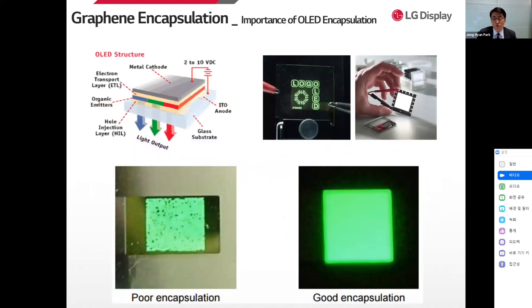This slide shows the importance of OLED encapsulation. OLED has a structure that is vulnerable to moisture in the gaseous state. When the upper layer of the OLED device is exposed to external moisture or oxygen, pixel shrinkage occurs in which the light-emitting area is reduced, or a dark spot non-emission area is created in the light-emitting area. The role of encapsulation is to prevent the oxidation of light-emitting materials and electrode materials by blocking moisture and oxygen flowing in from the outside of the device.